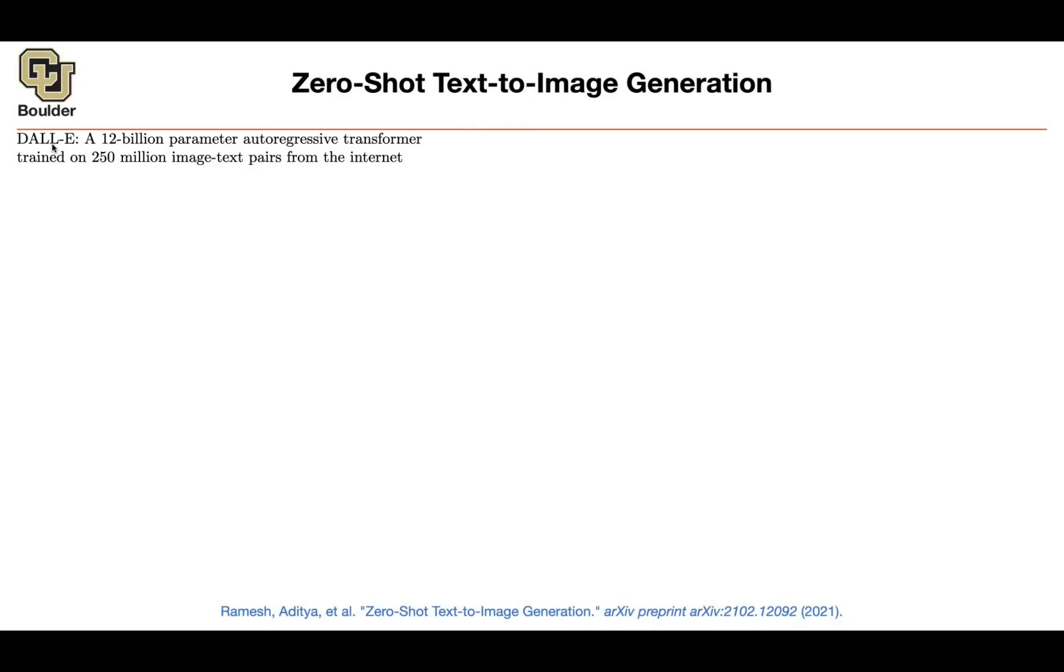I'm sure you have heard of this, DALL-E, the method. It's a 12 billion parameter autoregressive transformer. So you are taking a transformer, it's an autoregressive transformer, it has a lot of parameters. And because it has a lot of parameters, you are going to train it on a lot of images or pairs of images and text.